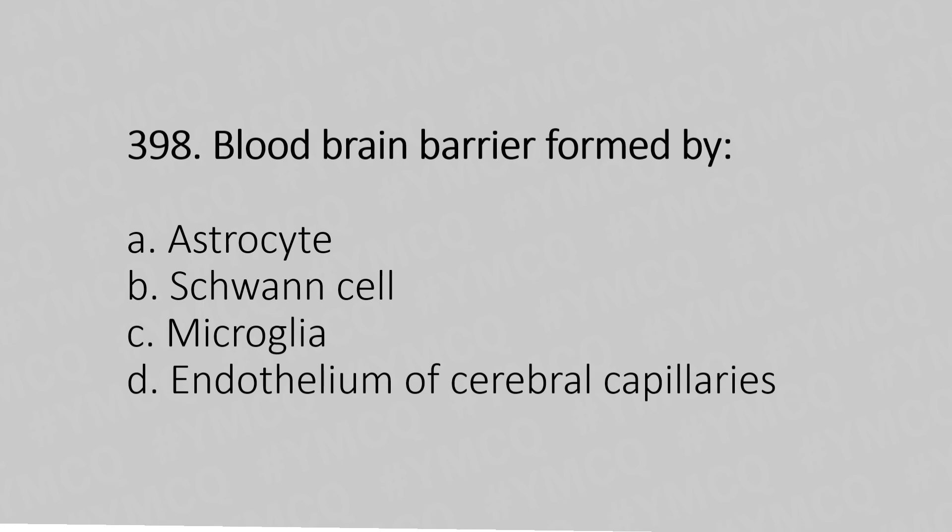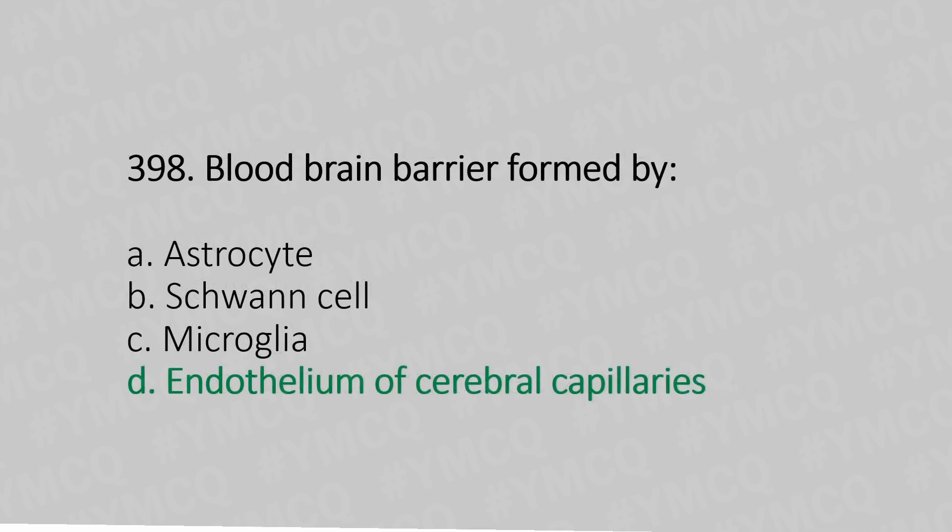Question 398: The blood-brain barrier is formed by which of the following? Option A: astrocytes. Option B: Schwann cells. Option C: microglia. Option D: endothelium of the cerebral capillaries. The answer is Option D: endothelium of the cerebral capillaries.